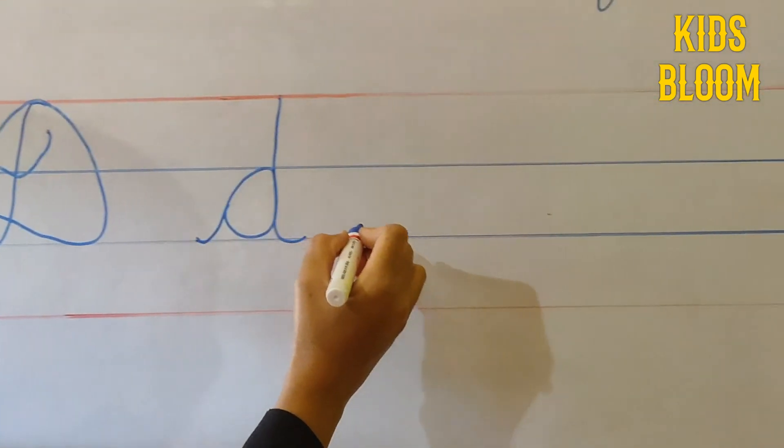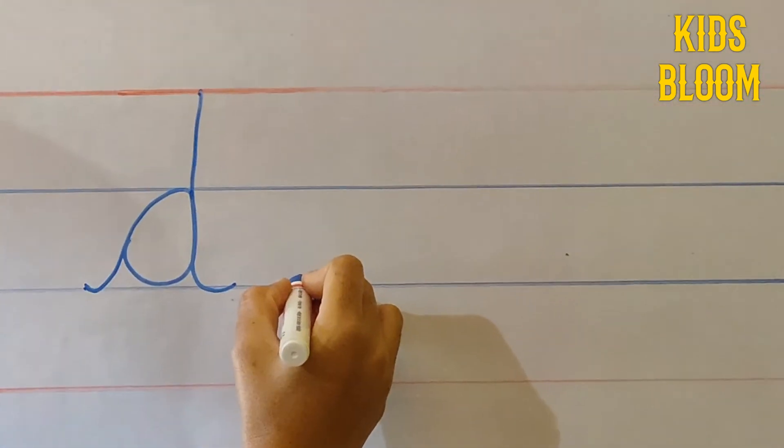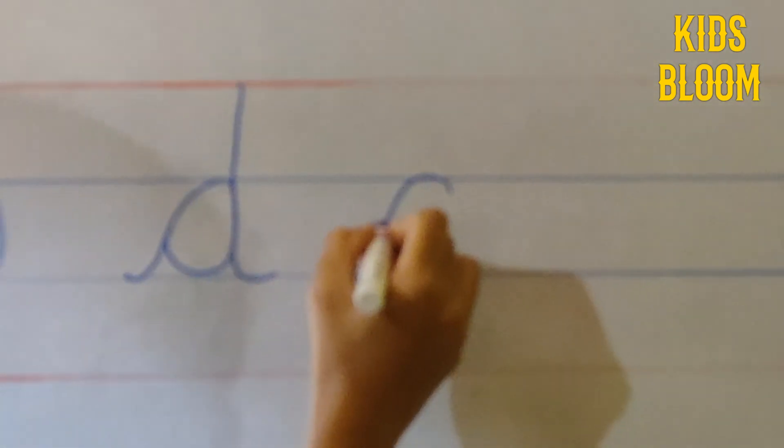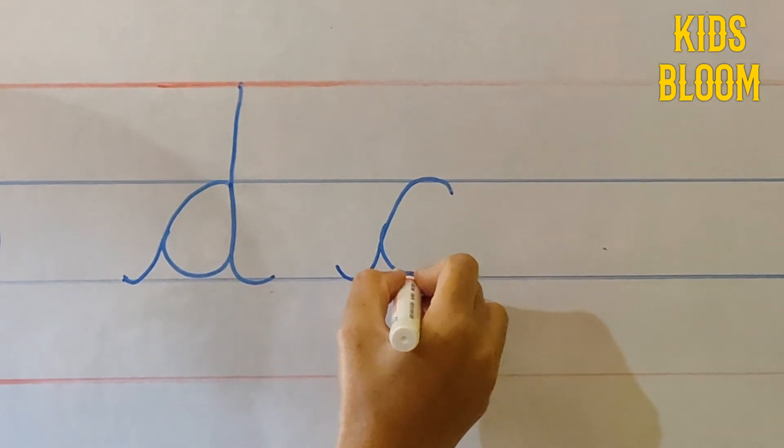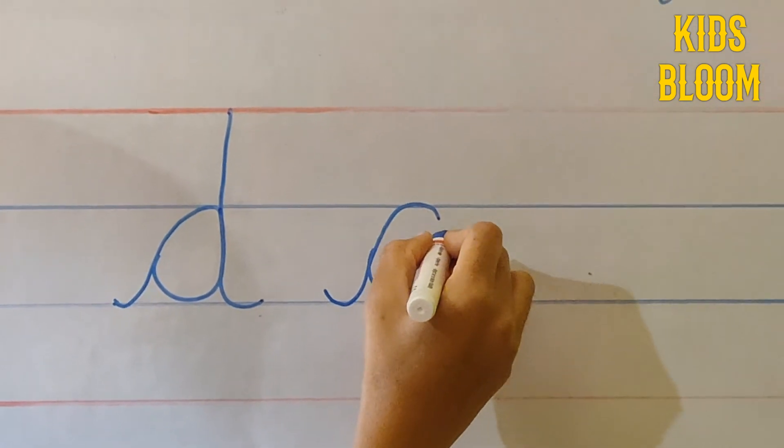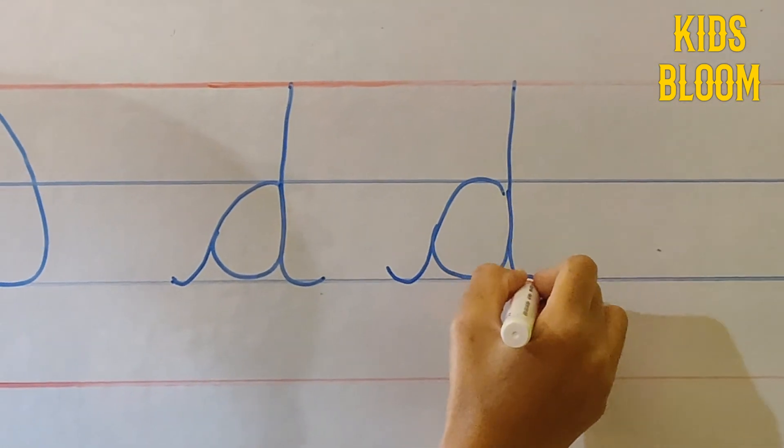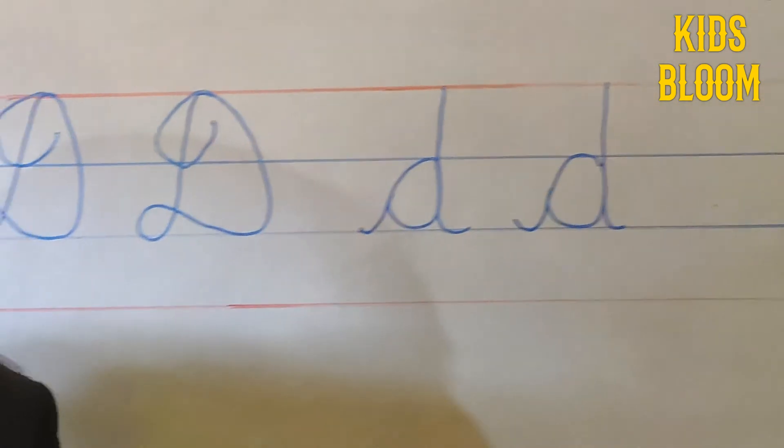Once again have a look. Hold your pencil on the third line, make a small curve, again finish this till the third line and then make a curve. This is our cursive D.